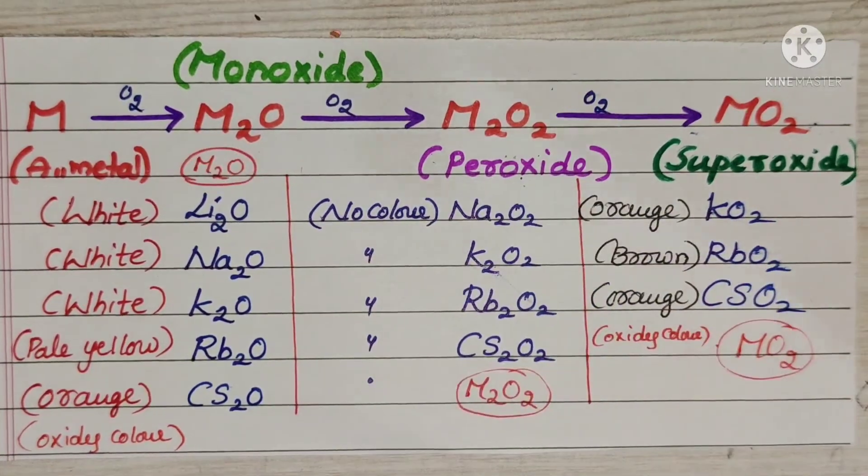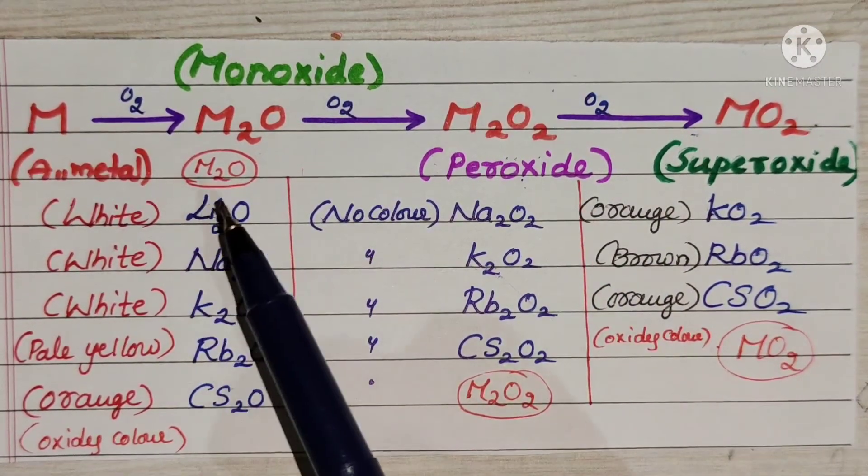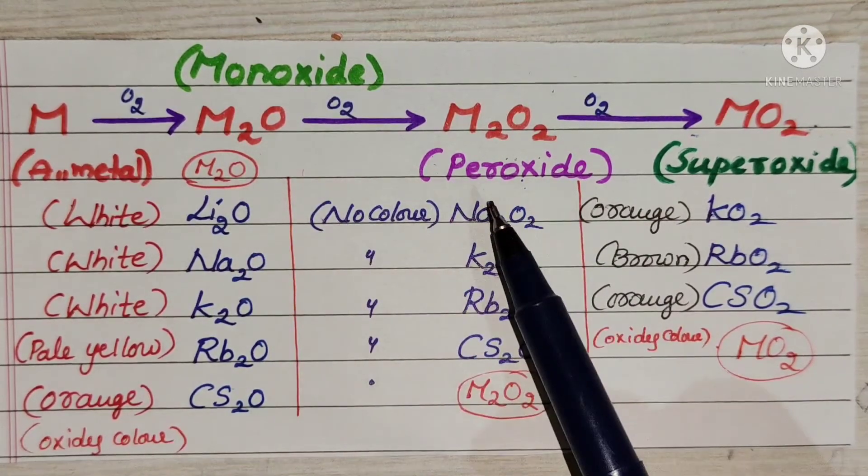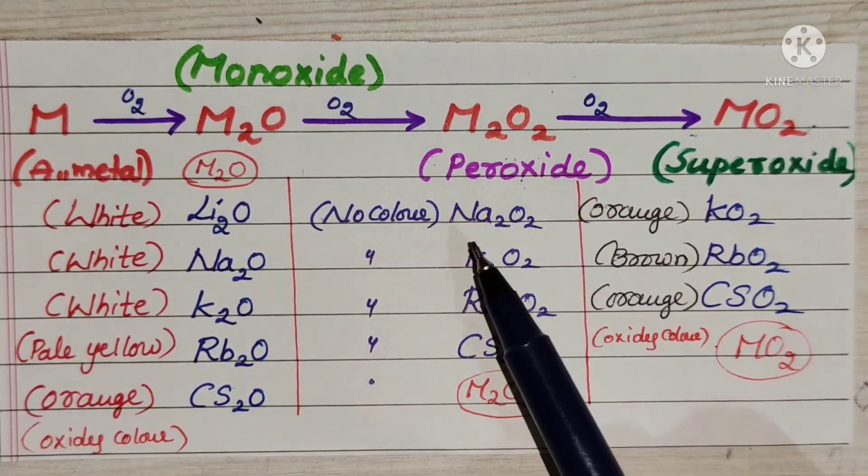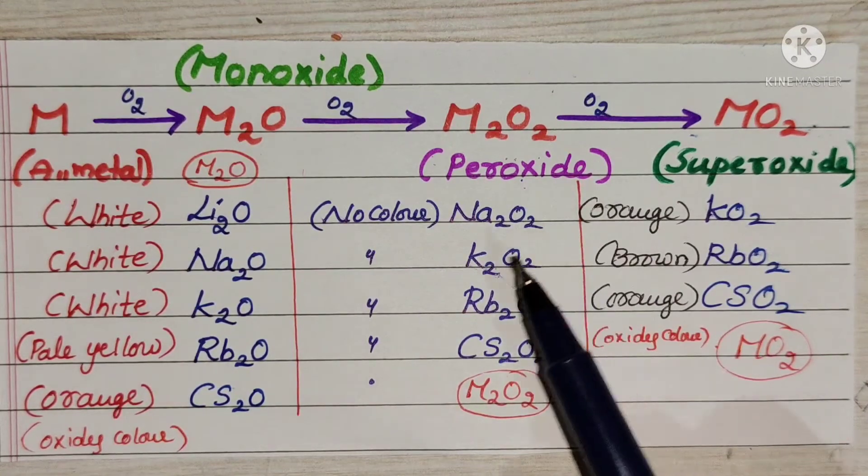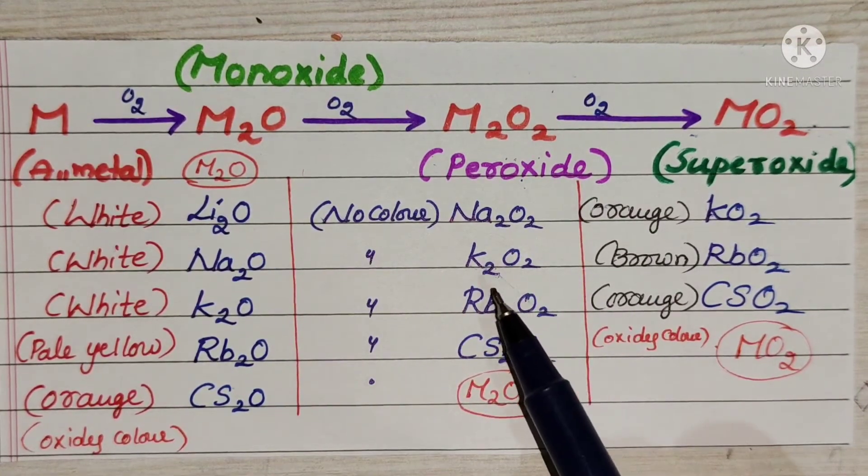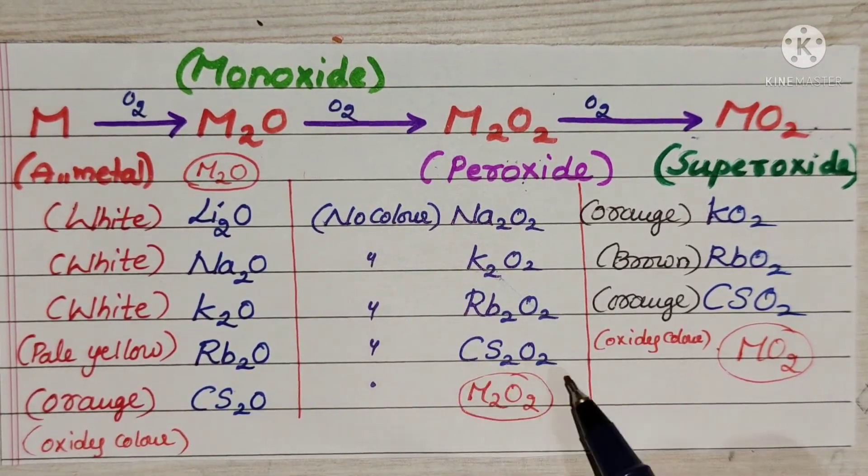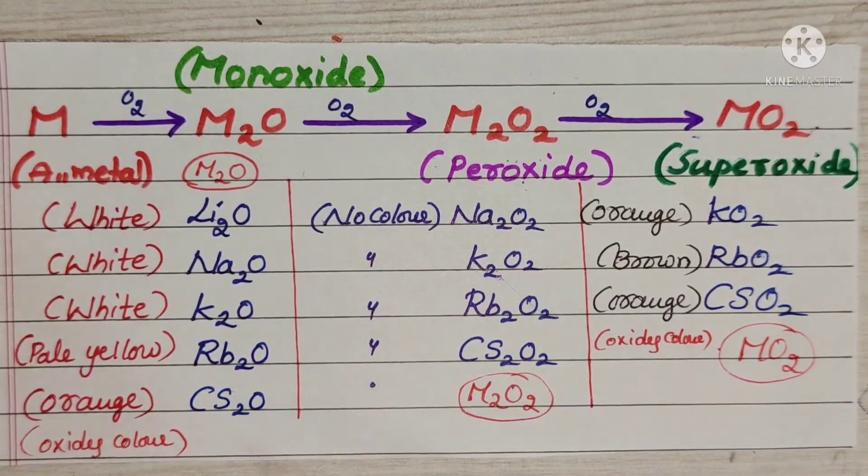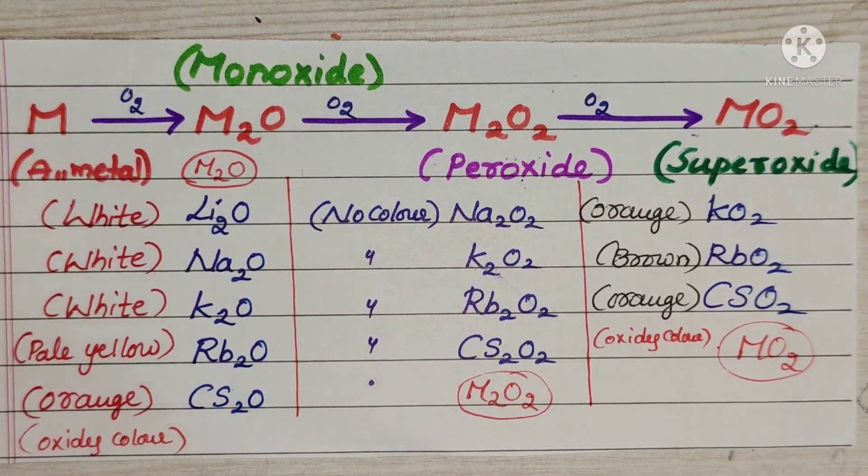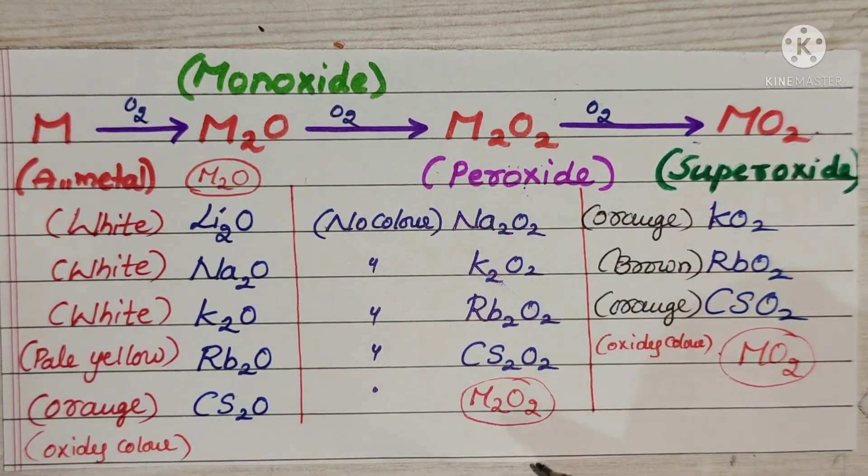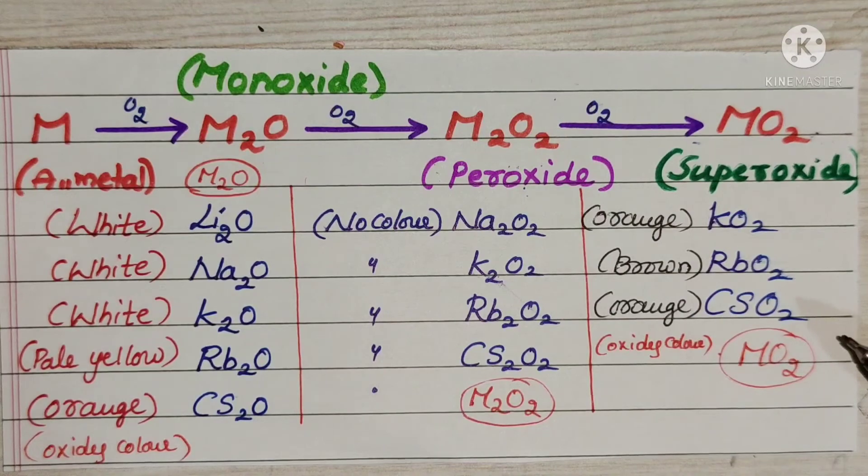Peroxides: sodium peroxide no color properties, potassium peroxide no color properties, rubidium peroxide no color properties, cesium peroxide no color properties. Nothing but peroxides cannot give any type of color. Simply based on this M2O2 formula you may identify that the given compound is peroxide.